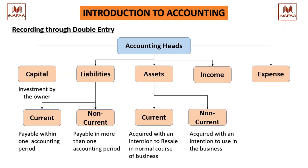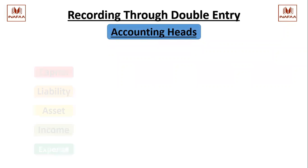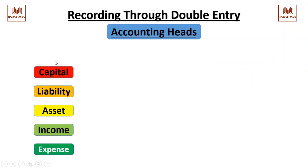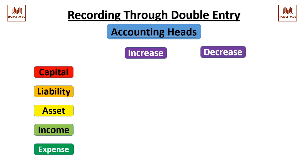As this slide was discussed yesterday, I will move to the next slide in which we shall discuss how to record the transactions. I have written the same accounting heads in a vertical format - capital. Whenever there is a transaction, there is a resultant increase or decrease in one of these accounting heads. For the purpose of recording, consider that you have a page with two sides - one is the left side and one is the right side.